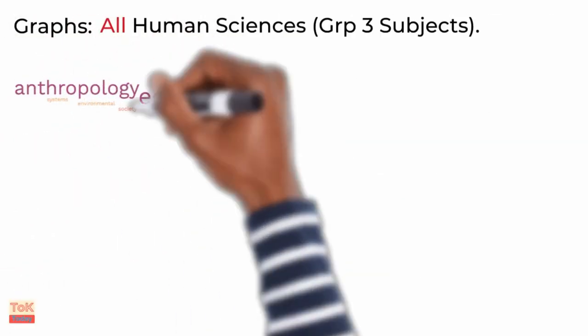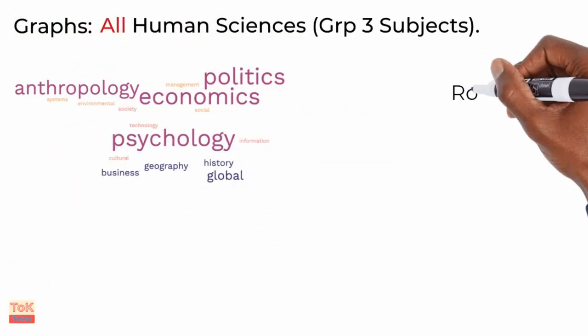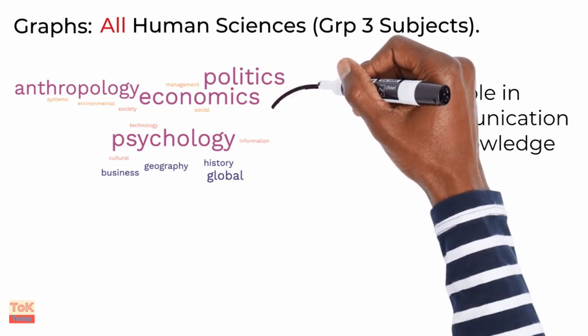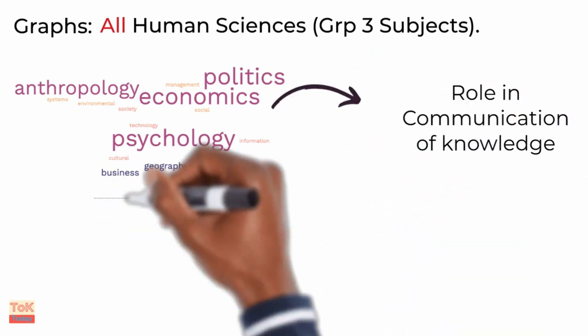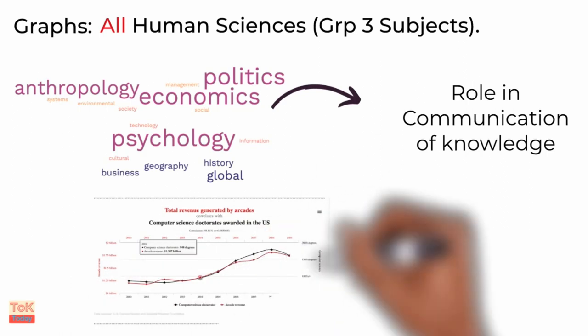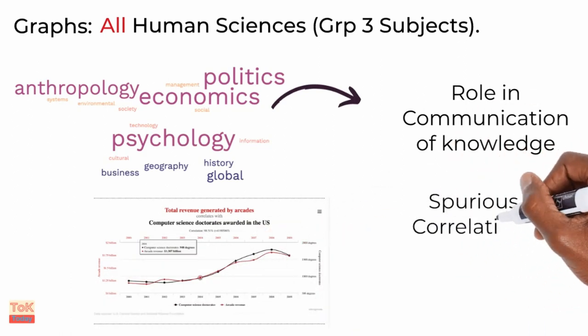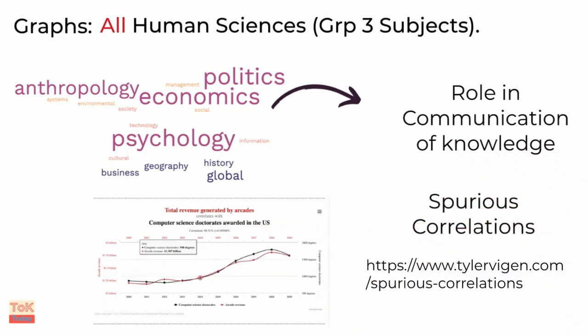Now, you all take a human science subject, a group three subject, so you all have many examples that you can draw from your subject. One of my favourite discussions here is about the misinterpretation of correlation curves, and if you're going to consider this, you may want to check out the wonderful Spurious Correlations website.